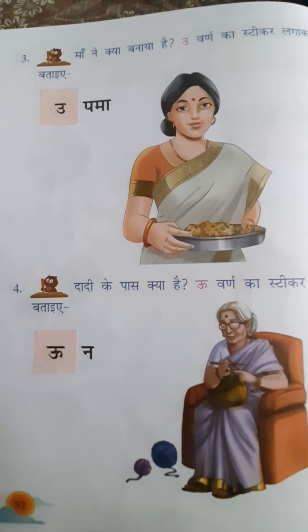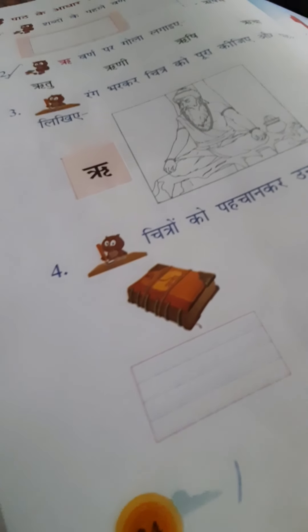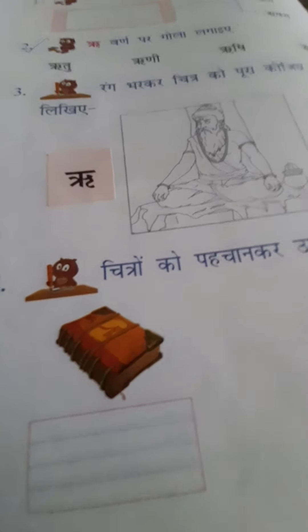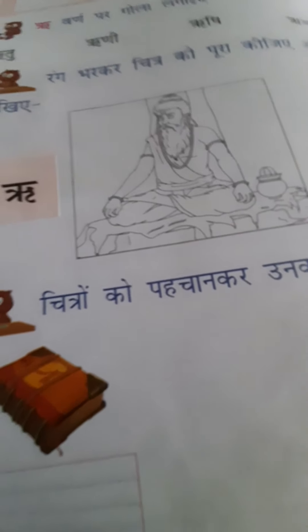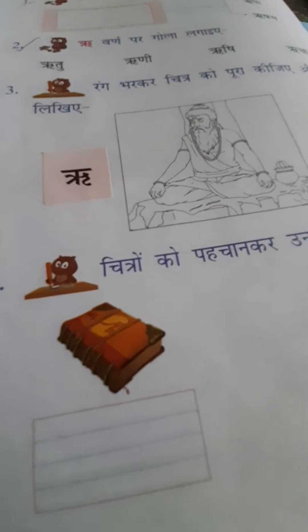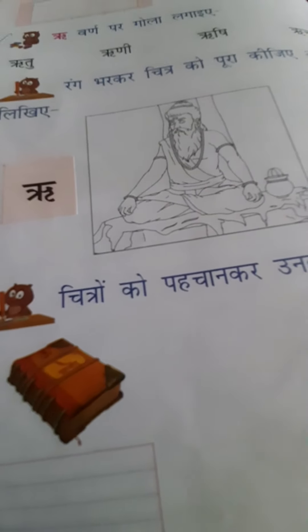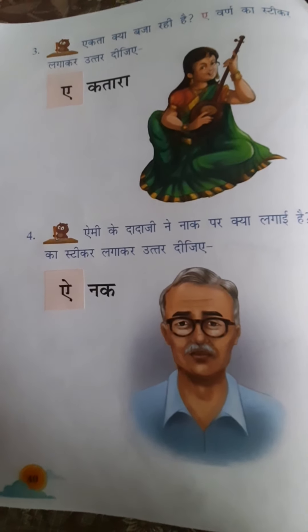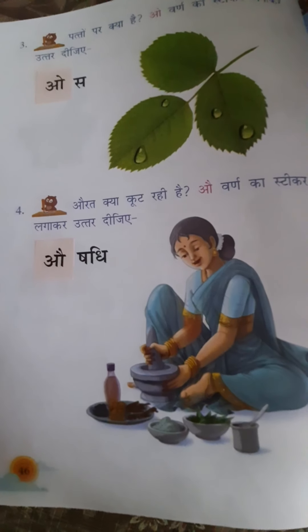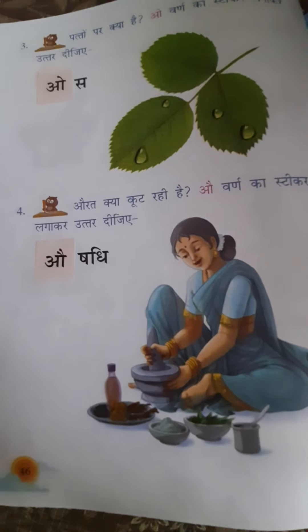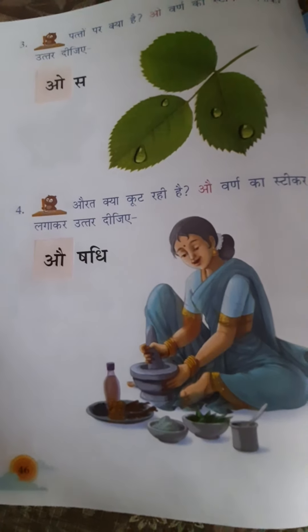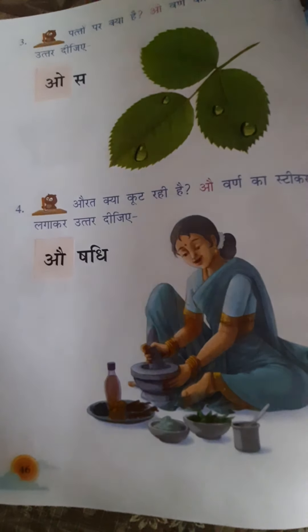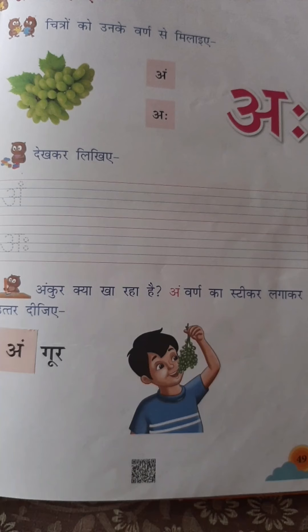Then next, page number 32 — you can see two boxes, Upma and Un, U and U. For R there is no extra space given, so we are pasting near to the picture — Rishi picture ke paas lagaiye R. In page number 40, Ek Tara and Aynak. In page number 46 you have to paste O and Au — O se Aushadi. Then the last one, page 49 — Angur.